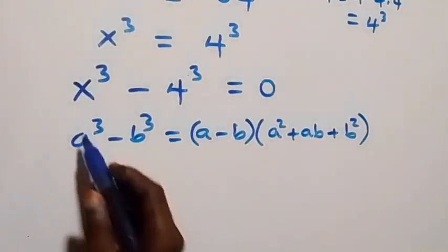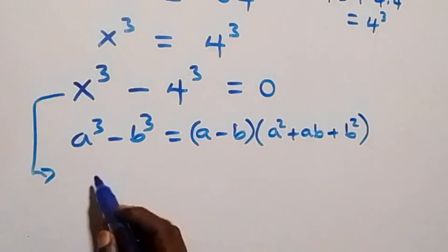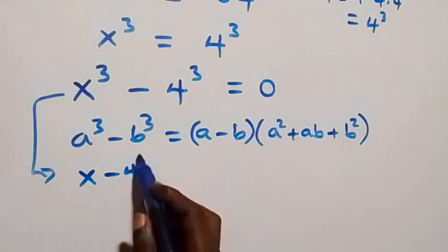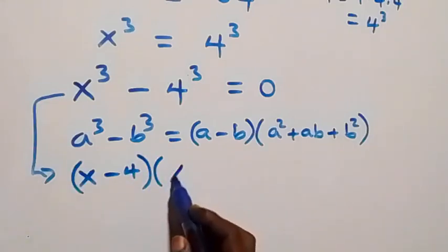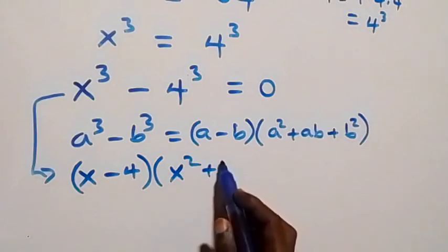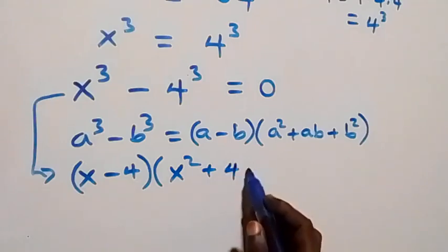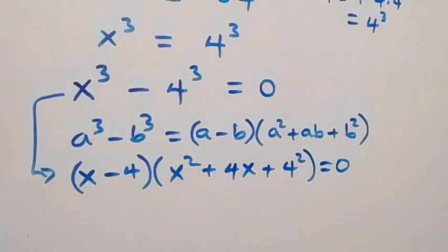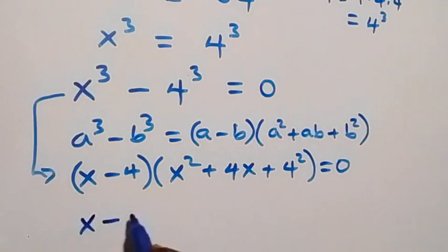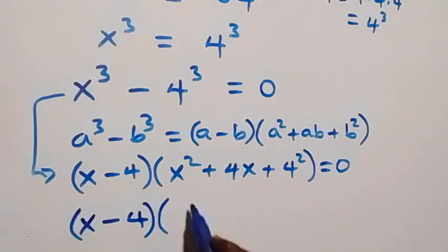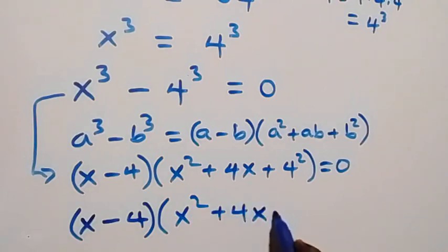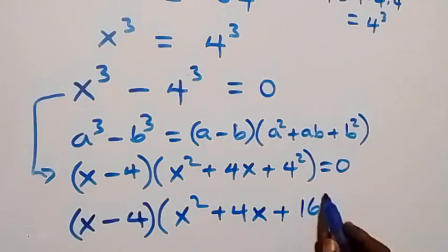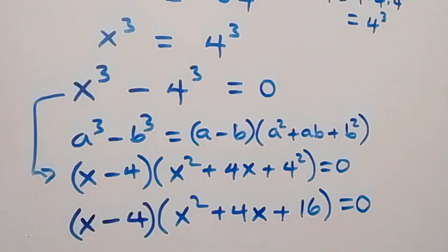Following this pattern we have (x minus 4) times (x squared plus x times 4, that's 4x, plus 4 squared) equals 0. Simplifying the bracket we have x squared plus 4x plus 16 equals 0.